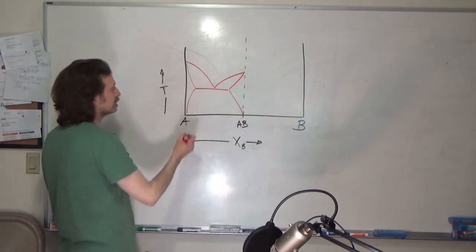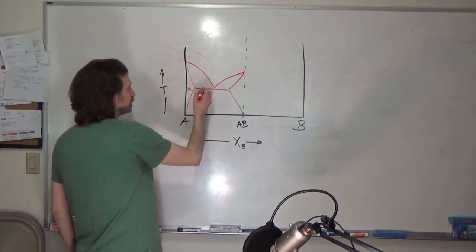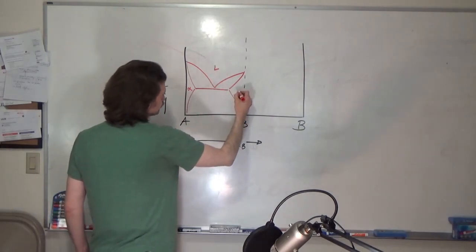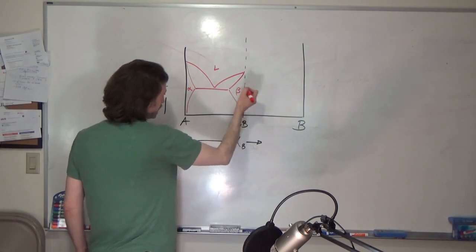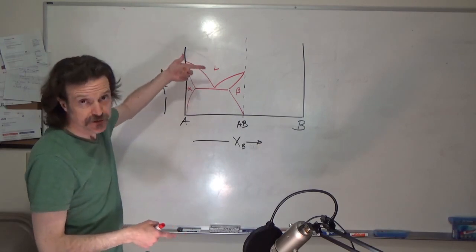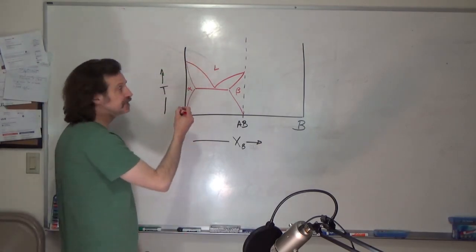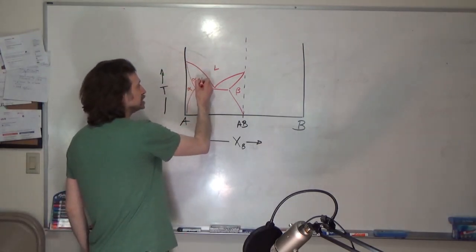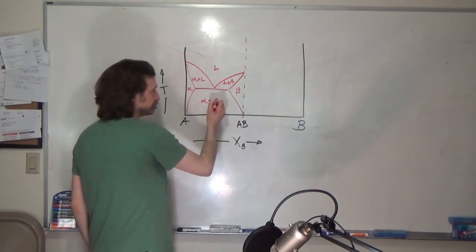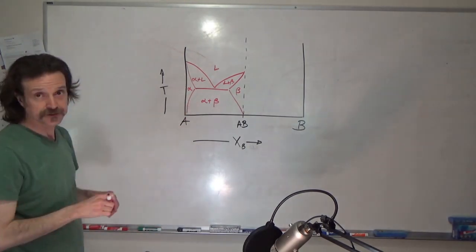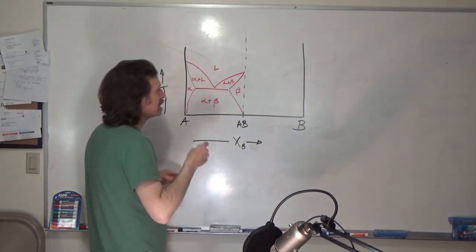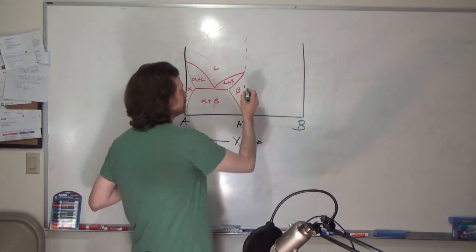On the left side we have something like this — let's call this alpha, liquid, and beta. As usual, we have two single-phase regions separated by two-phase regions: alpha plus liquid, liquid plus beta, and alpha plus beta. On the other side, I'm going to change colors.